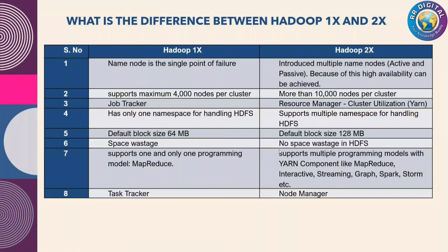Coming to the fourth point: Hadoop 1x has only one namespace for handling HDFS, but in 2x we have multiple namespaces for handling HDFS. The fifth point: Hadoop 1x default block size is 64 MB but can be increased up to 128 MB max. In 2x the default block size itself is 128 MB and you can increase it up to 1 GB, though increasing to 1 GB still has some drawbacks. Most projects increase it from 128 MB to 256 MB only.